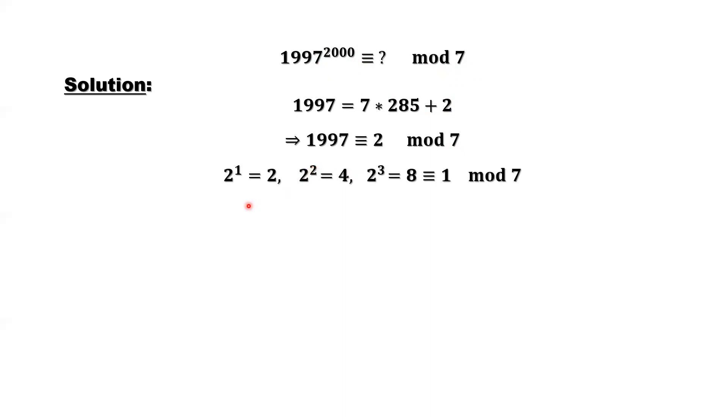In order to find 2 to the power 2000, what is the remainder if divided by 7? We need to consider 2 to the power 1, 2 to the power 2, 2 to the power 3, continue to discuss until we find something, then we can stop.